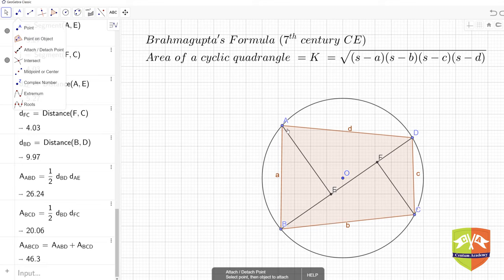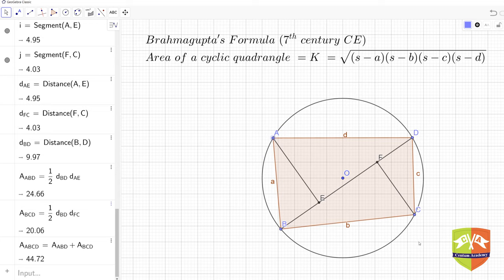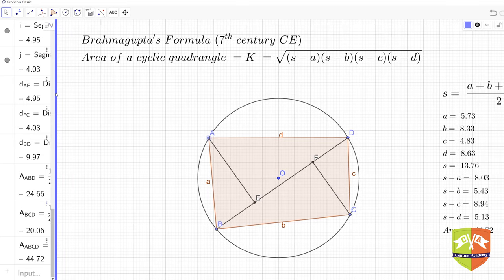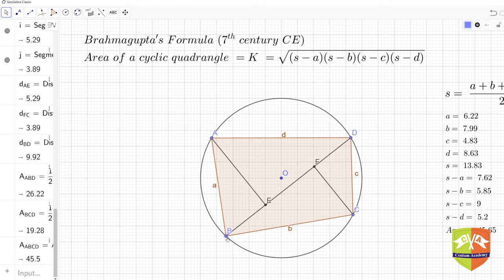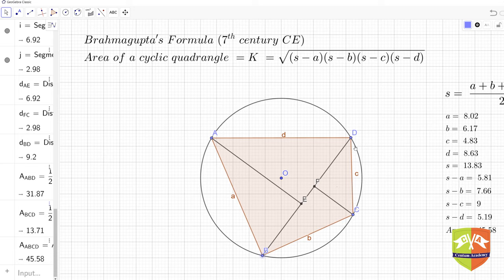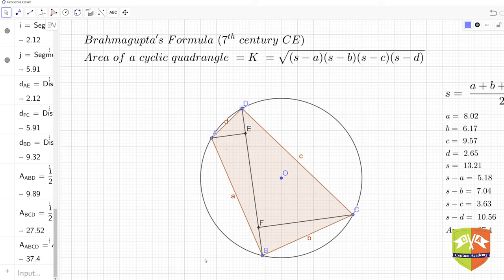If I change the location of point A, you can see 44.72 in both calculations. If I change B, it's 45.58 and 45.58. If I move D, it's 37.4 and 37.4. So we can very easily see that this formula given by Brahmagupta in the 7th century for the area of a cyclic quadrilateral as root over (semiperimeter minus a) times (semiperimeter minus b) times (semiperimeter minus c) times (semiperimeter minus d) works. We validated it by finding the area as the sum of the areas of two triangles divided by one of the diagonals.